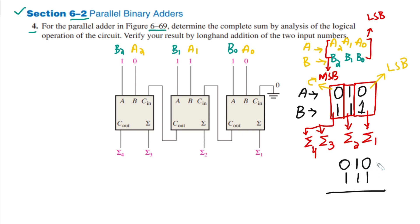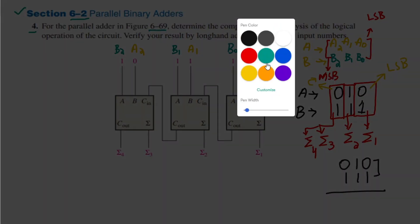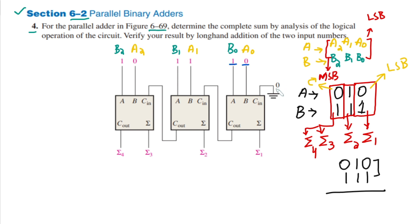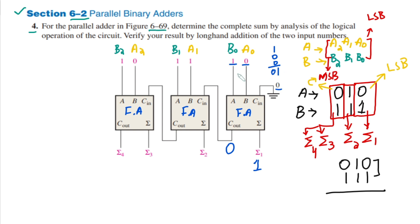Starting the addition: for the first full adder, I have A0=0, B0=1, and carry-in=0, since there is no previous adder. All three adders here are full adders. Adding 1, 0, 0 gives 1, which in binary is represented as 01. So the sum output of the first adder is 1 and the carry out is 0.